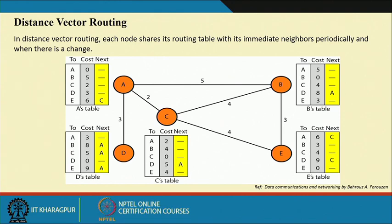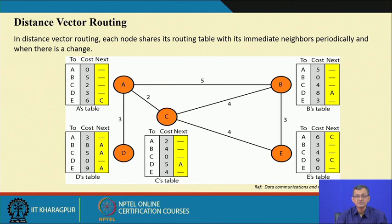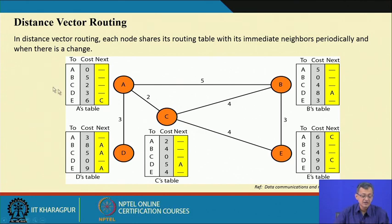In distance vector, each node shares its routing table — its knowledge about the network — with its immediate neighbors periodically and when there is a change, either every time period T or when there is a change. For example, A knows that from A to A the cost is 0, A to B is 5, A to C is 2, A to D is 3, and A to E is 6.